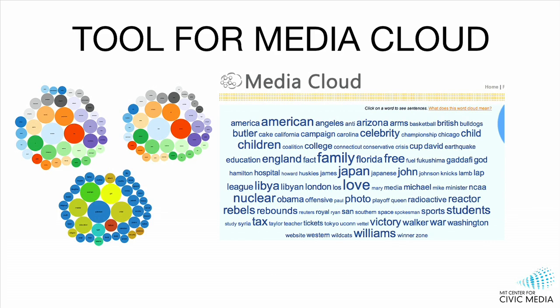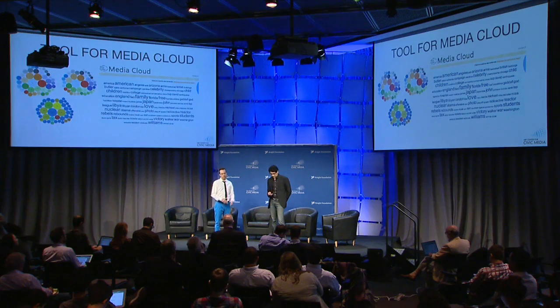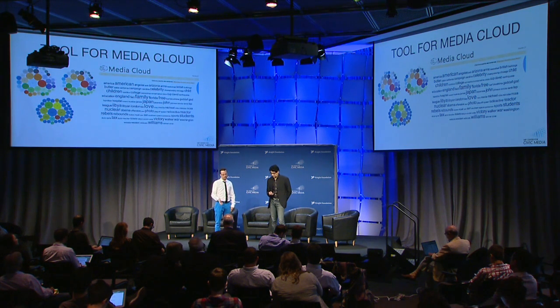We're working with the amazing platform Media Cloud, which has a massive amount of online news media collected for five or six years. It's a great system that allows you to target a search using keywords, a date-time range, and a particular type of media source — broken out into mainstream media, left-leaning blogs, right-leaning blogs, and other categories. Even with a keyword search, like in Google, you get a massive amount of documents. So if you're a citizen journalist or a researcher, you still have a hard time teasing out what the frames and conversations are.